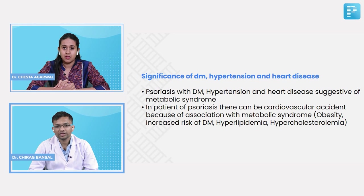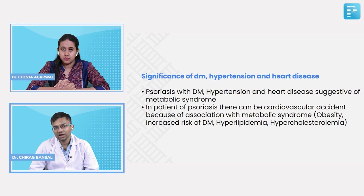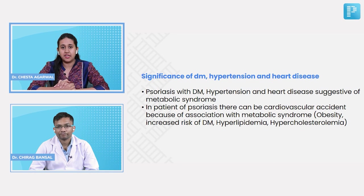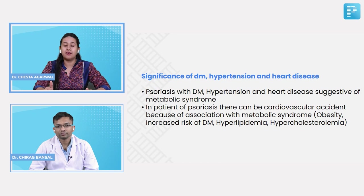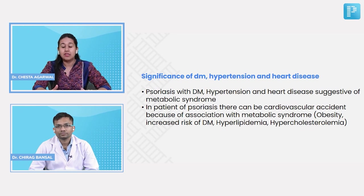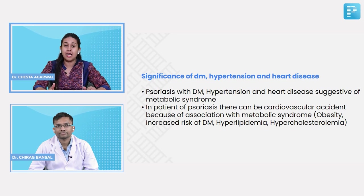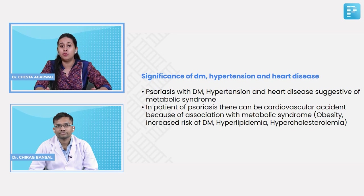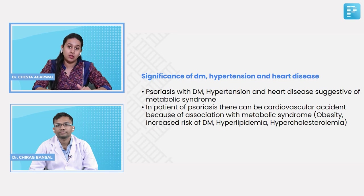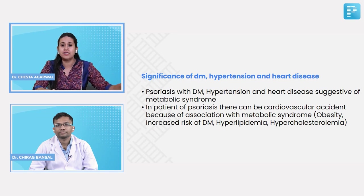If there is diabetes mellitus or hypertension in a patient of psoriasis, it is suggestive of metabolic syndrome. Psoriasis has a significant association with metabolic syndrome. In the majority of psoriasis patients, they can land up with cardiovascular accidents due to this strong association. They have high waist-to-hip ratio or obesity, increased risk of diabetes mellitus, hyperlipidemias, and hypercholesterolemias, which can become a cause of death. We always need to note the associated comorbid conditions.